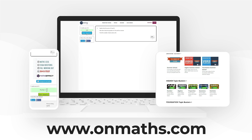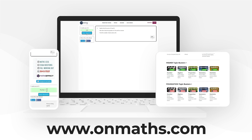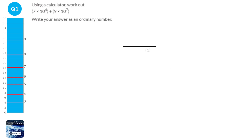If you like what we do, please consider subscribing. So 7 times 10 to the power of 4 is going to be 70,000. And 9 times 10 to the power of 7 will be 90 million.